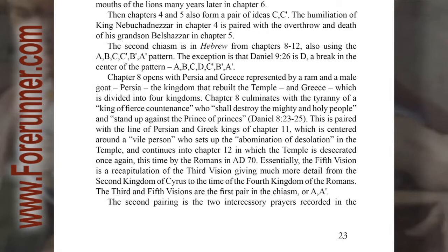Chapter 8 opens with Persia and Greece, represented by a ram and a male goat — Persia, the kingdom that rebuilt the temple, and Greece, which is divided into four kingdoms. Chapter 8 culminates with the tyranny of a king of fierce countenance who shall destroy the mighty and holy people and stand up to the prince of princes (Daniel 8:23-25). This is paired with the line of Persian and Greek kings of chapter 11, which is centered around a vile person who sets up the abomination of desolation in the temple, and continues into chapter 12, in which the temple is desecrated once again by the Romans in AD 70. Essentially, the fifth vision is a recapitulation of the third vision, giving much more detail from the second kingdom of Cyrus to the time of the fourth kingdom of the Romans.